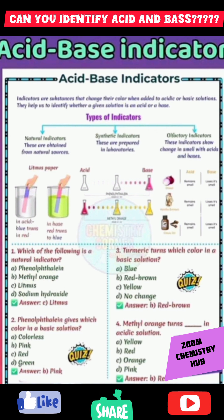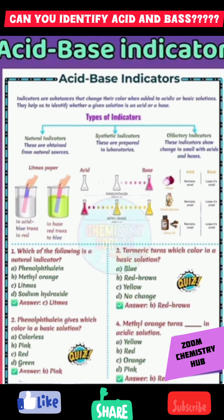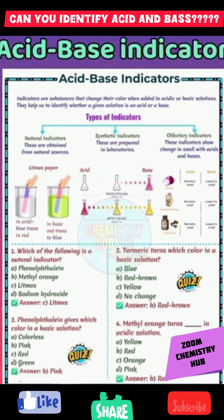Third: turmeric shows which color in a basic solution? The answer is red-brown. Fourth: methyl orange turns what color in an acidic solution? The answer is red — methyl orange turns red in acidic solution.